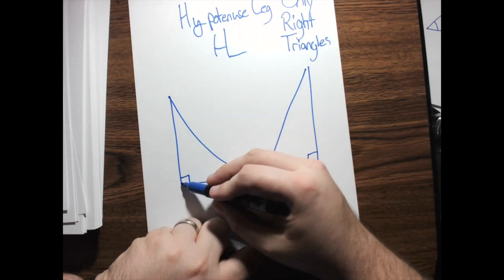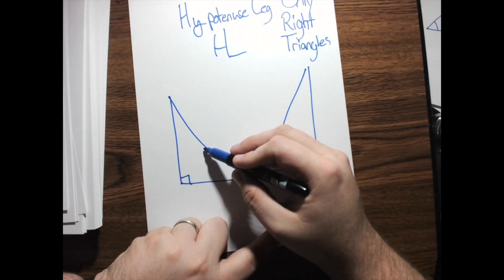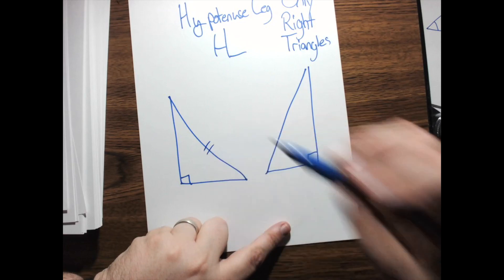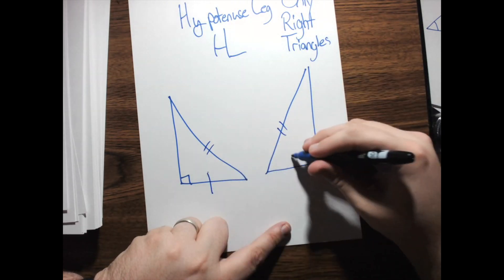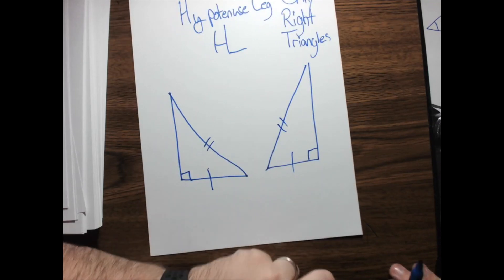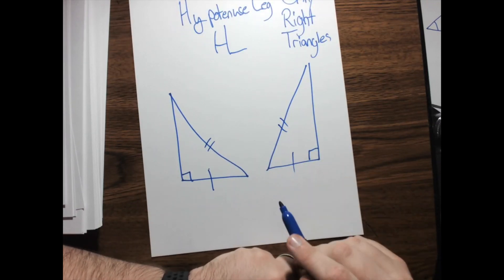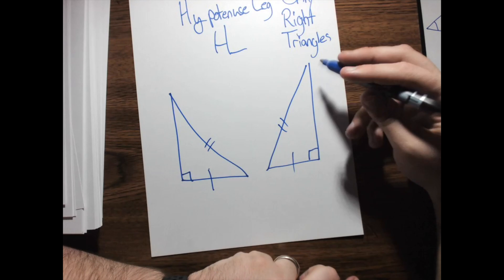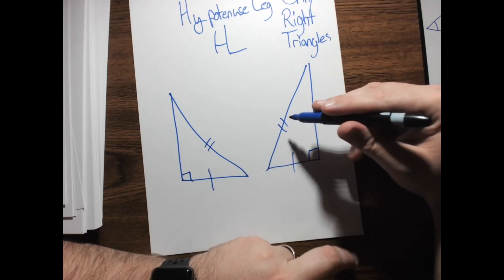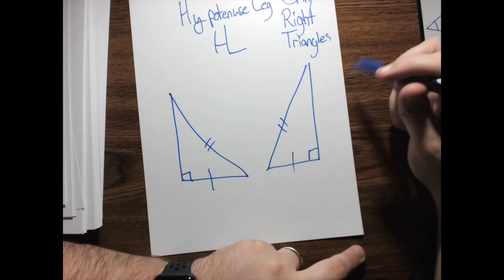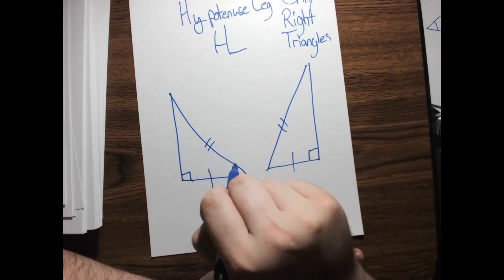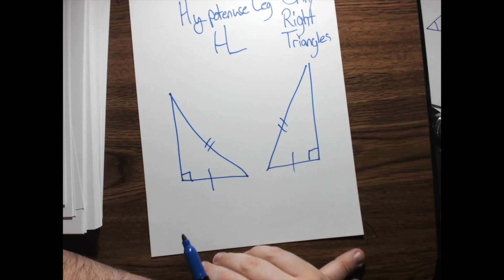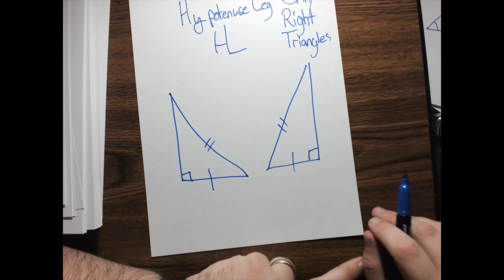If I know that the hypotenuse, which, remember, is the side opposite the 90 degree angle, is the same on both, and then one of our legs is the same, well, think about it this way. If I knew that this was 3 and this was 5, there's only one possible value this could be. I would do 5 squared minus 3 squared, so 25 minus 9, which is 16 square root. This would have to be 4. And, if these were the same, these would also have to be 4 because of the Pythagorean theorem.